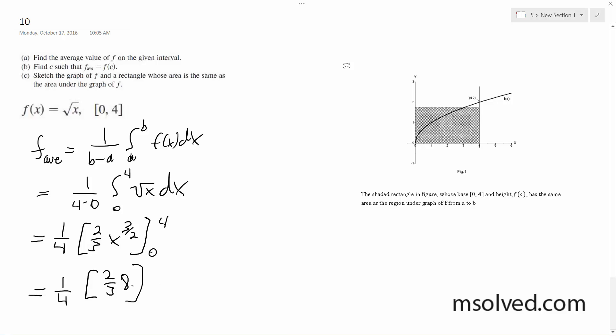And then we get 16/3 times 1/4, or 1/4 of 16 over 12, which is 4/3. All right, and then for c such that f average is equal to f of c.